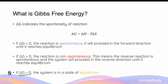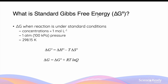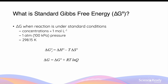Now, what about standard Gibbs free energy, often represented by ΔG with a naught symbol in the superscript? The standard Gibbs free energy is the value of ΔG when the reaction occurs under standard conditions. Standard conditions refer to when substances in the system have a concentration of 1 mol/L, at atmospheric pressure (1 atm or 100 kPa), and at a temperature of 298.15 K (25°C). The standard change in Gibbs free energy can be calculated using: ΔG° = ΔH° − T·ΔS°.